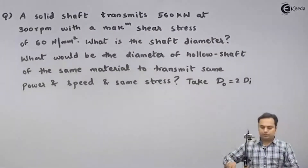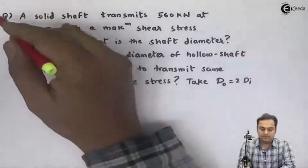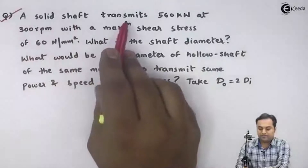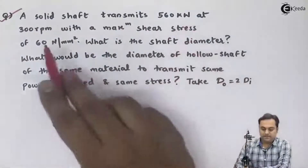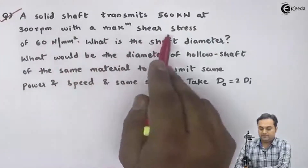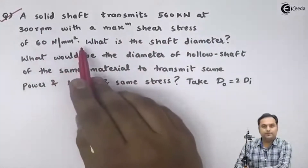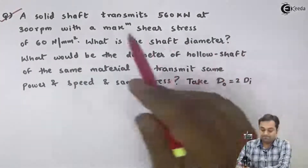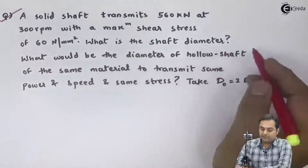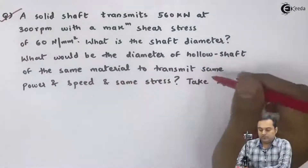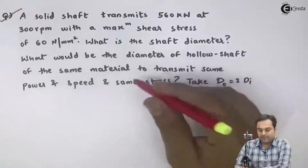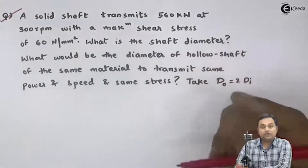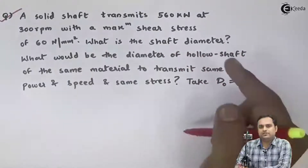Let us take the next question on torsion. A solid shaft transmits 560 kilowatts at 300 RPM with a maximum shear stress of 60 newton per mm square. What is the shaft diameter? This is the first question. What would be the diameter of a hollow shaft of the same material to transmit the same power and speed at the same stress? This is the second question. In the first part we calculate the shaft diameter, then we find the diameter when it is hollow.